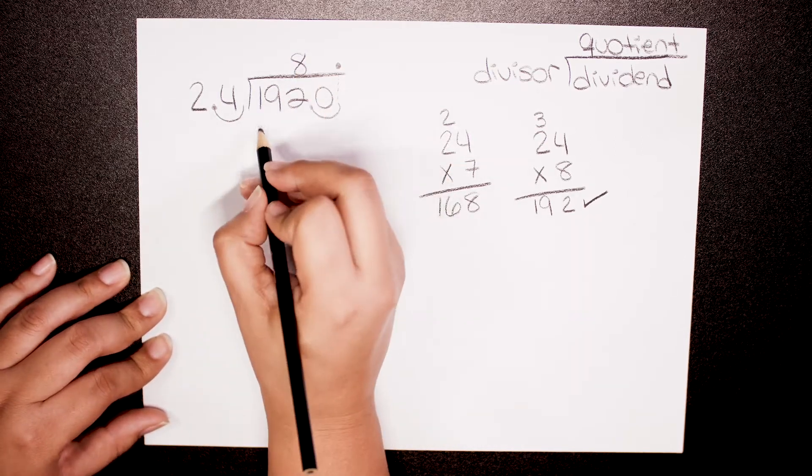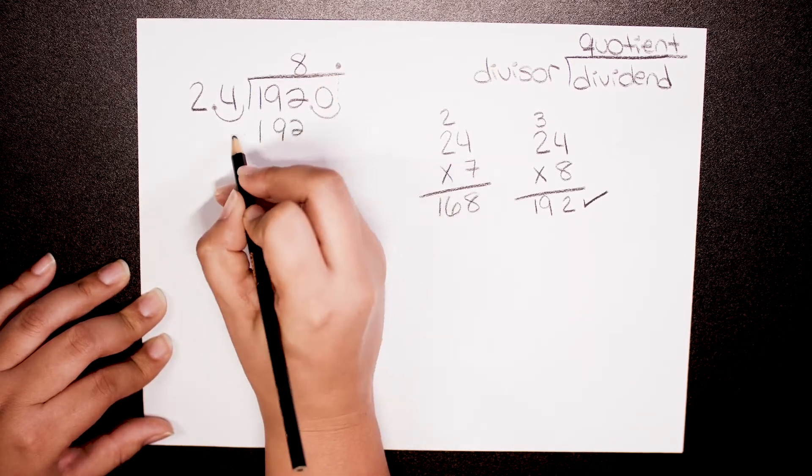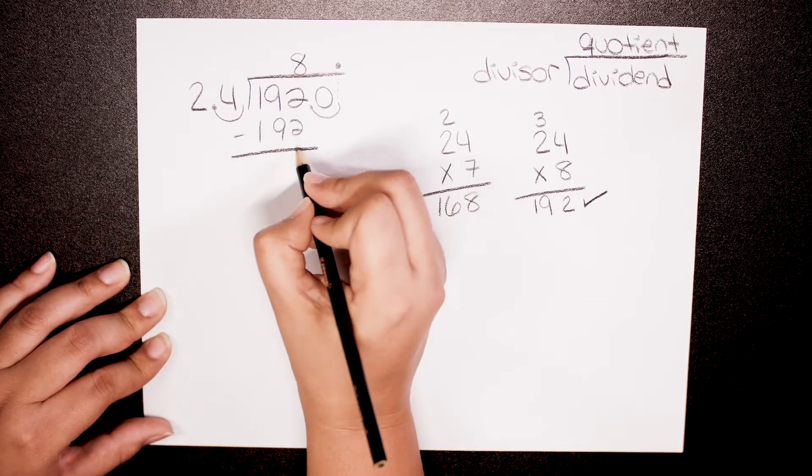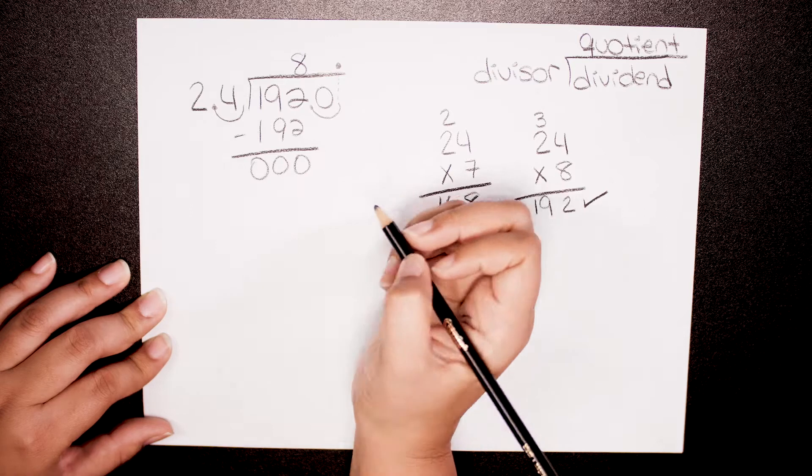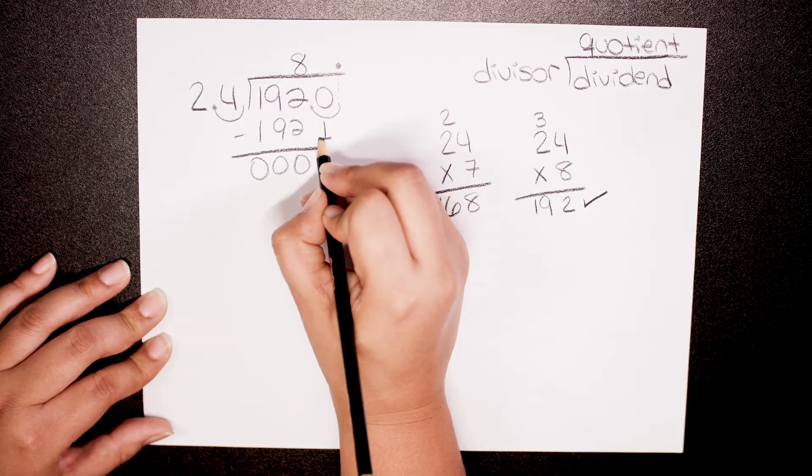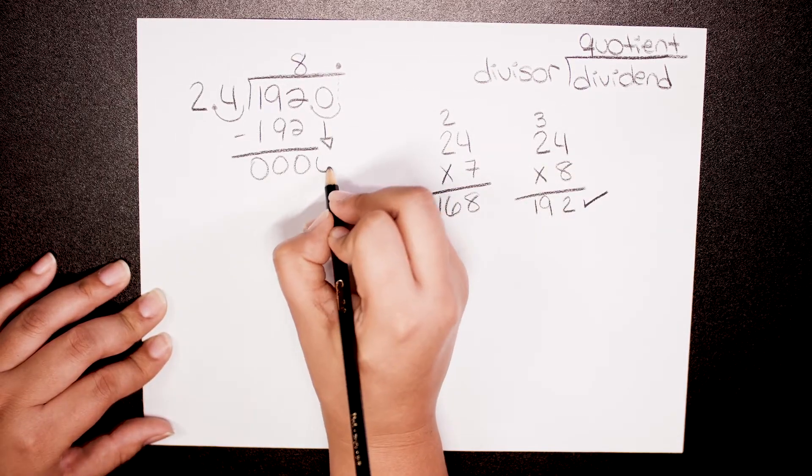24 times 8 is 192. 2 minus 2 is 0, 0, 0, 0. Now you're ready to bring down the next digit which is 0 again.